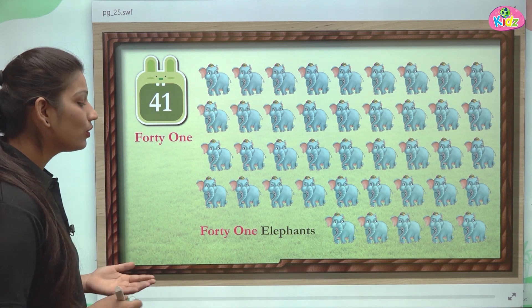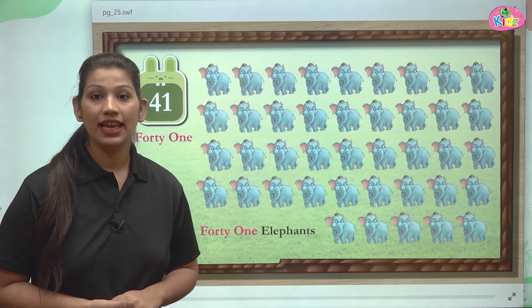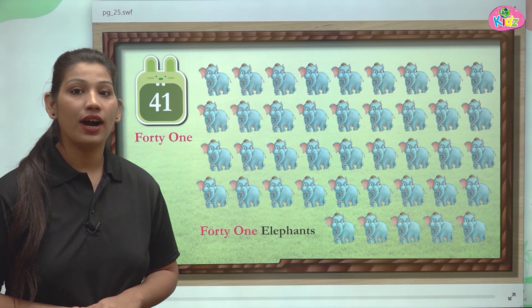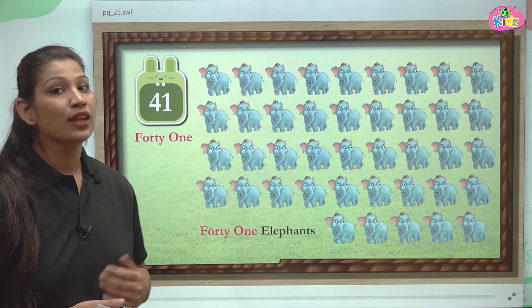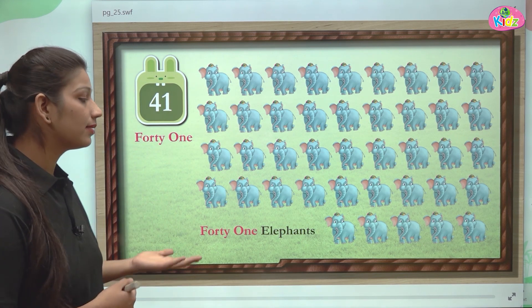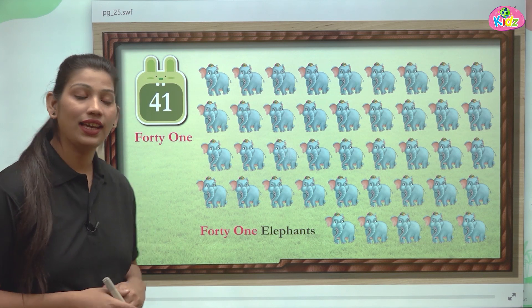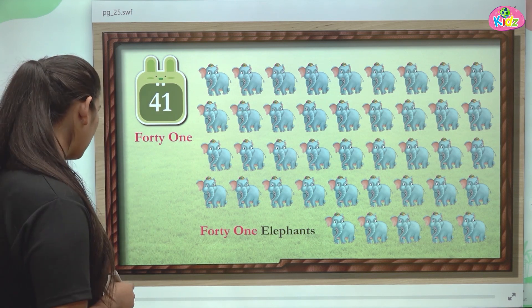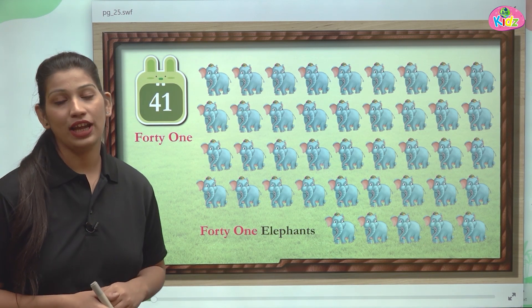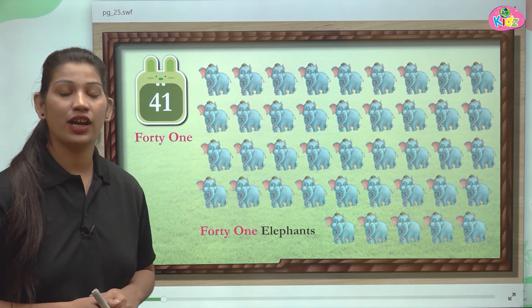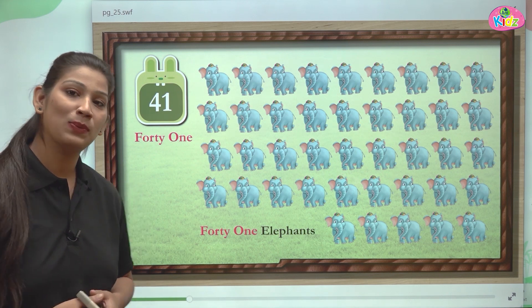You all know students the spelling of 40 — F-O-R-T-Y is 40. When we add O-N-E after FORTY, that's how it becomes 41. F-O-R-T-Y is 40, O-N-E is 1.